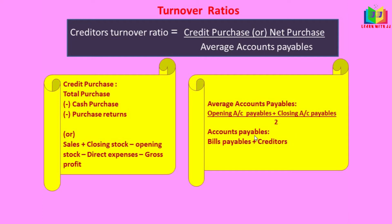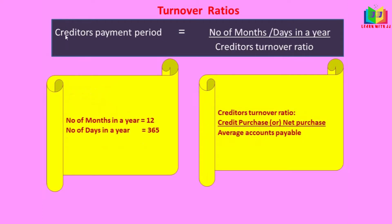Next is creditors payment period. The formula is number of months or days in a year divided by creditors turnover ratio. If it is months we take 12, and if it is days we take 365, divided by creditors turnover ratio. The formula for creditors turnover is credit purchase divided by average accounts payables, or net purchase in the absence of credit purchase.